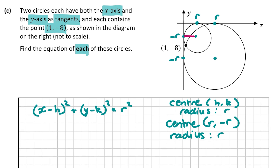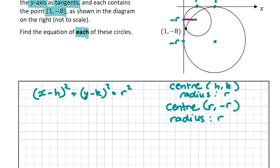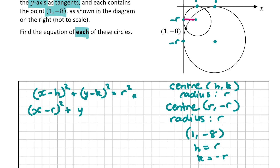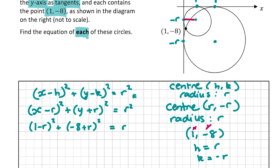Since both circles contain the point (1, minus 8), let's substitute into the general equation. With h equal to r and k equal to minus r, we get (x minus r) squared plus (y plus r) squared equals r squared. Substituting x equals 1 and y equals minus 8: (1 minus r) squared plus (minus 8 plus r) squared equals r squared.